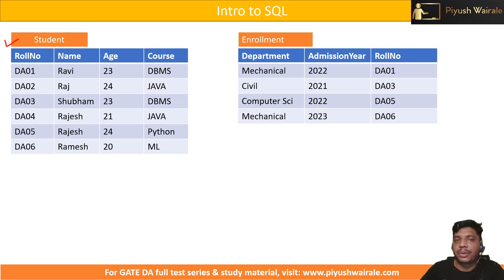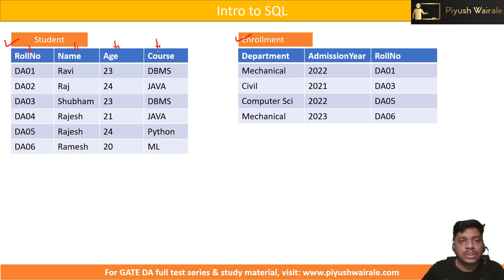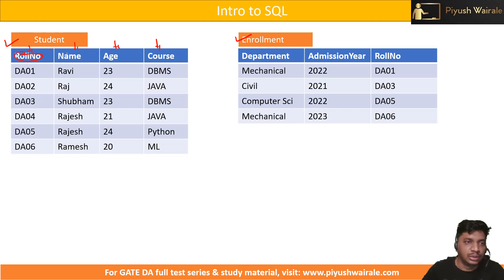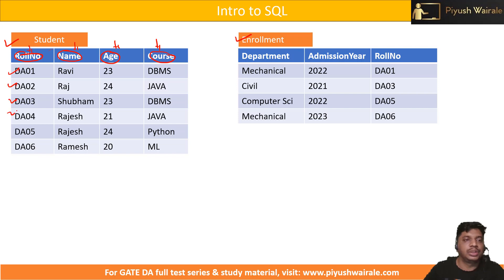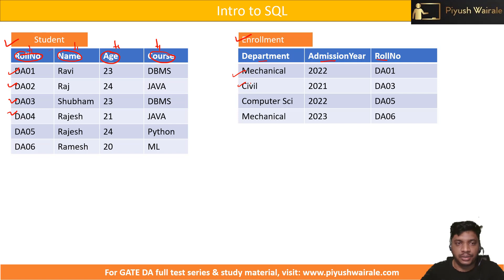We have a student table and we have an enrollment table. The student table has columns: roll number, name, age, and course — these are all the attributes of the student table. These are the rows of a particular student table. Same for enrollment also — department, admission year, and roll number are the attributes of the enrollment table, and these are the rows of a particular enrollment table.